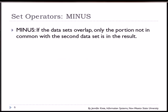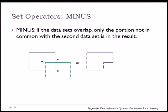The last is minus. If the data sets overlap, then only the portion not in common with the second data set is in the result. So we have data set A and we have data set B. So we'll see data set A minus any common data with data set B.